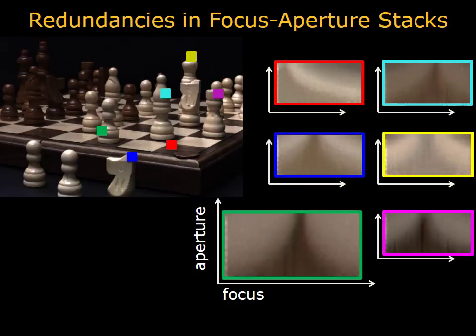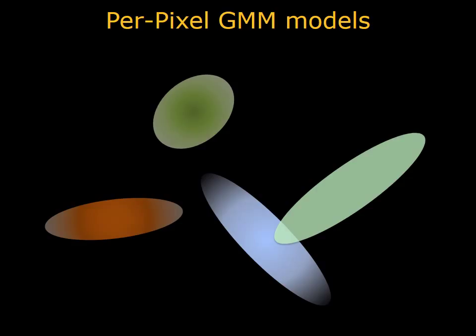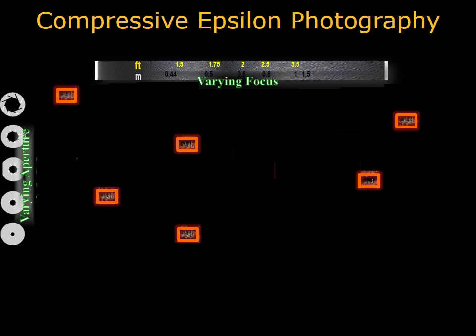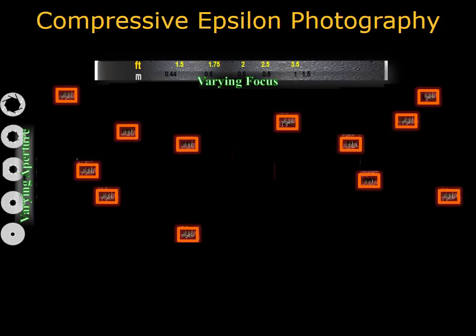Varying the camera's aperture and focus together yields aperture-focus images, which also exhibit similar structure and can be efficiently clustered. For the final algorithm, we use a more general per-pixel Gaussian mixture model to capture the redundancies present. This allows us to greedily choose images that minimize reconstruction error, meaning we can learn which key images best represent the entire epsilon photography stack.